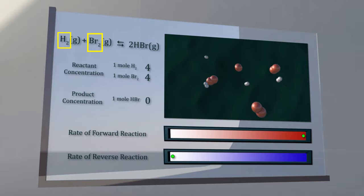The forward reaction of hydrogen gas and bromine gas produces hydrogen bromide gas. As the forward reaction proceeds, the concentrations of hydrogen and bromine gases decrease, and the concentration of hydrogen bromide gas increases.